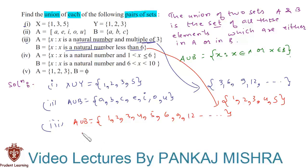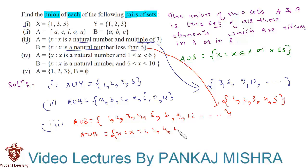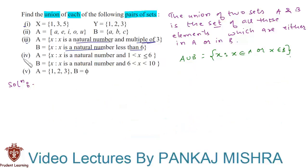We can also write this in set-builder form as A union B is equal to the set of X such that X is equal to 1, 2, 4, 5, or a multiple of 3.